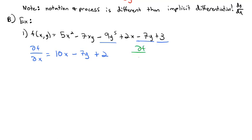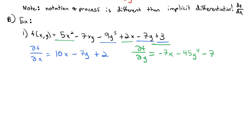We can also take the partial derivative of f with respect to y. The 5x² is now a constant, so that's 0. For -7xy, the derivative of y is 1, so we're left with -7x. The derivative of -9y⁵ is -45y⁴, bringing the 5 out front and dropping the exponent by 1. The 2x is all constant, the derivative of -7y is -7, and 3 is a constant so its derivative is 0. So the partial derivative with respect to y is -7x - 45y⁴ - 7.